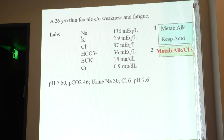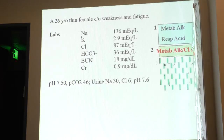Now using the cheat sheet: the urine chloride was given because metabolic alkalosis is either chloride-sensitive or chloride-resistant. The urine chloride is 6, which is less than 25, so this is chloride-sensitive. Next, check compensation.